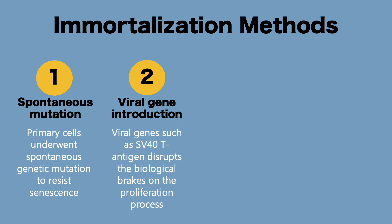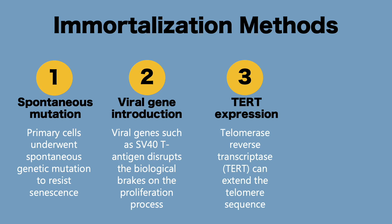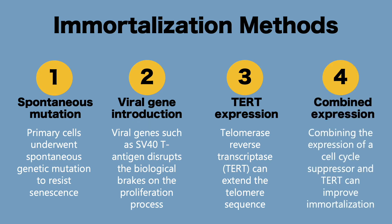Another method is to express exogenous telomerase, a reverse transcriptase or TERT protein, in the cells. This protein can extend the telomere — a repetitive sequence of DNA at the ends of chromosomes — which would gradually shorten during cellular division. The last method is by combining the expression of cell cycle suppressor proteins and TERT protein to improve upon the third immortalization method. Presently, these methods are being widely used in research to lengthen the shelf life of primary cells.